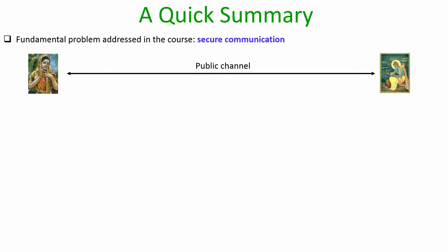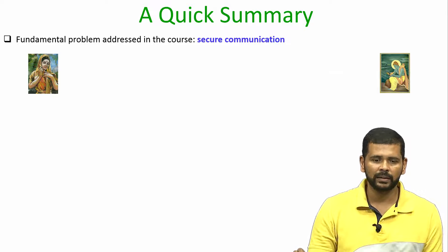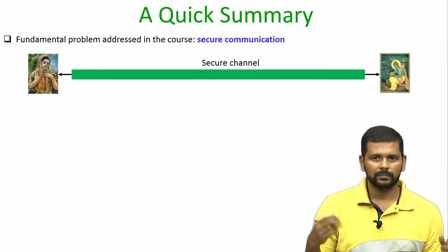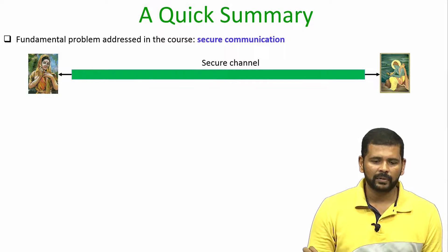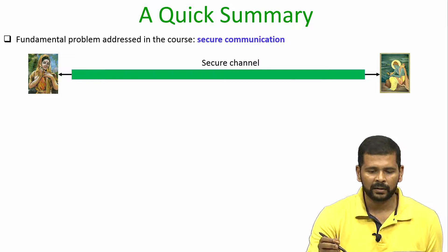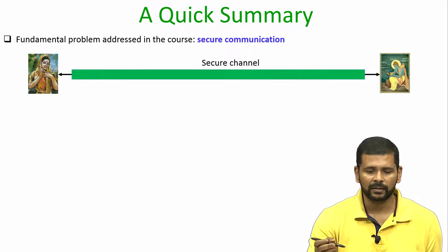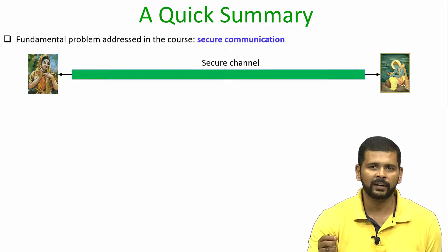The fundamental problem that we have addressed in this course is that of secure communication. The problem statement is: we have two unknown parties who do not have any pre-shared information — say Sita and Ram — meeting for the first time, connected by a publicly known channel. Their goal is to apply some algorithms and get the effect of a virtual secure channel over this publicly known channel, ensuring they are talking securely. When I say secure, that means satisfying three properties: privacy, integrity, and authentication.